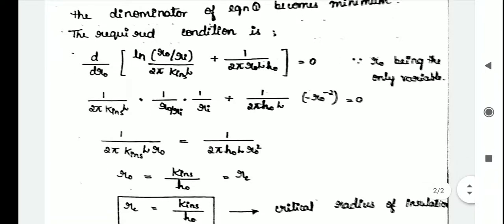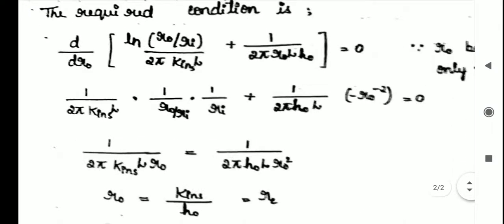Here R0, Ri get cancelled. So 1 divided by 2pi K insulated into L into Rout equals 1 divided by 2pi H0 into L into R0 square.